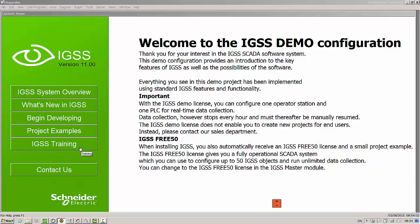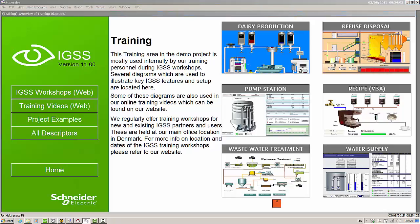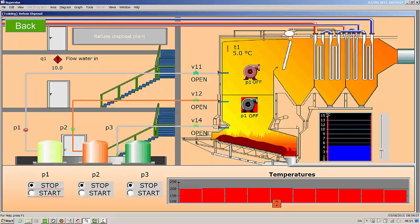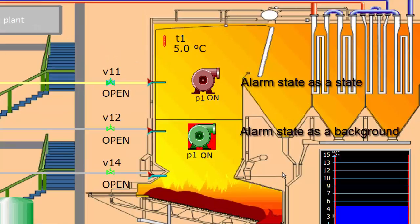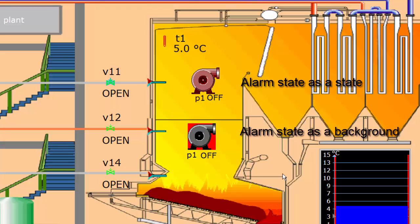The animated symbols have also been improved in IGSS 11. You can set an animated symbol to display alarms either as a state or in the background. Here, two pump animated symbols have been connected to the same P1 object. The symbols display the alarms in two different ways — one as a state and the other as a background. If you choose to depict alarms as a state, the alarm state will be displayed instead of the object state, meaning the object state cannot be seen. If you choose to depict alarms in the background, the animated symbol will still display the object state when the object is in alarm, and instead the background will be displayed with whatever properties have been defined for the alarm.